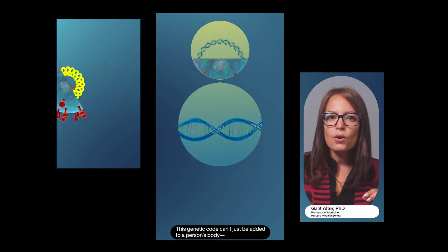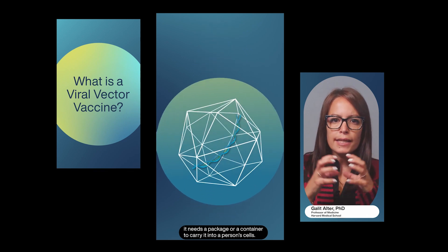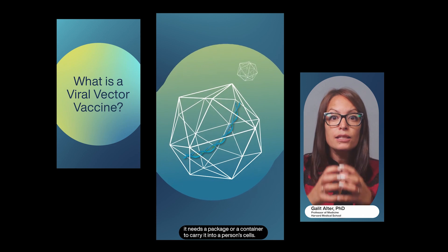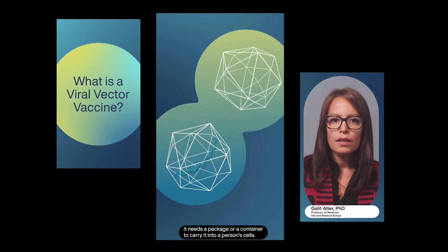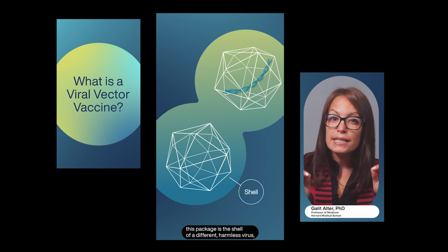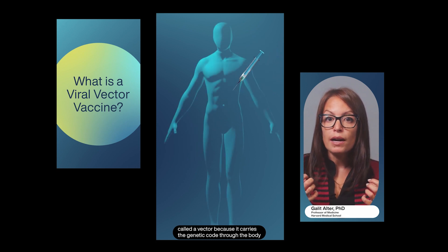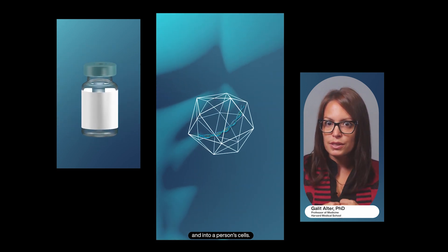This genetic code can't just be added to a person's body. It needs a package or a container to carry it into a person's cells. In a viral vector vaccine, this package is the shell of a different, harmless virus called a vector because it carries the genetic code through the body and into a person's cells.